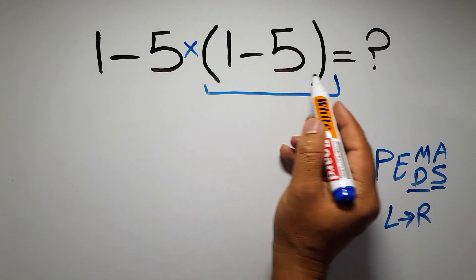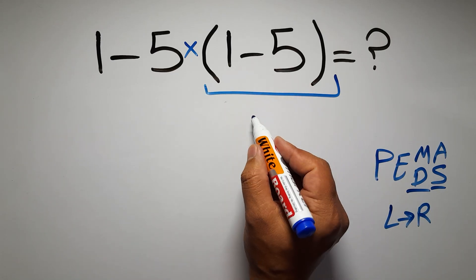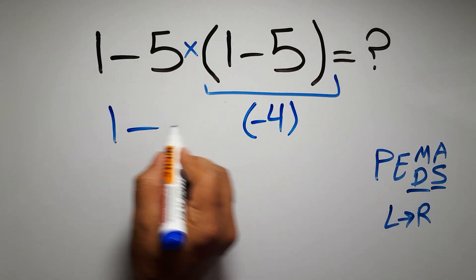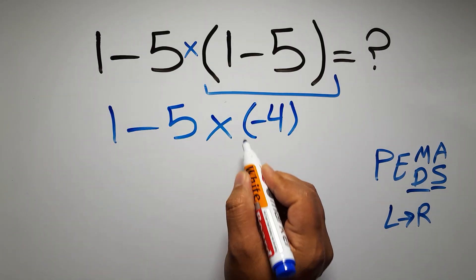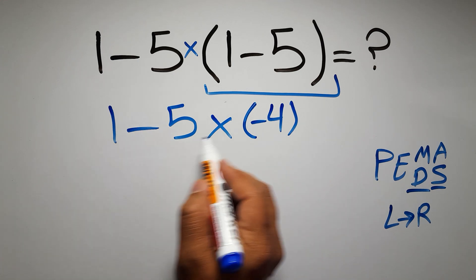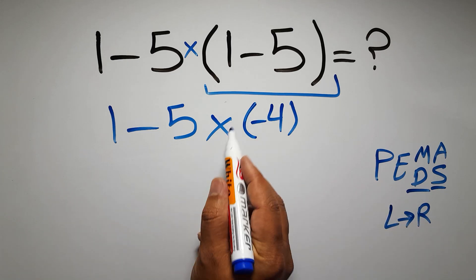So first this parentheses: inside this parentheses we have 1 minus 5, which equals negative 4. So 1 minus 5 times negative 4. In this expression we have 1 subtraction and 1 multiplication. According to PEMDAS, multiplication has higher priority than subtraction.